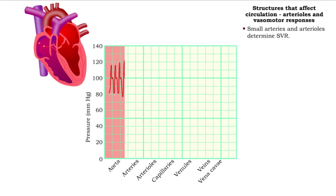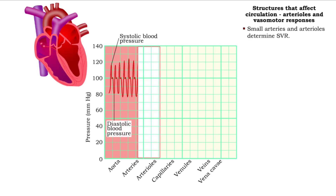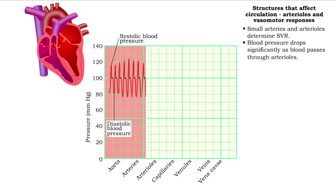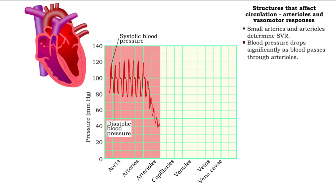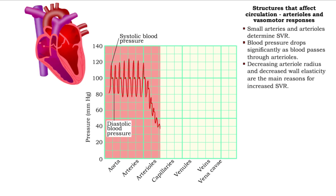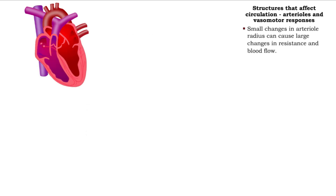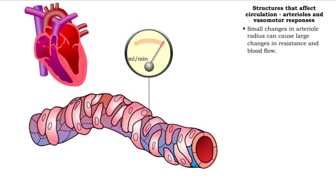Small arteries and arterioles play a primary role in determining systemic vascular resistance. As blood passes through arterioles, pressure decreases significantly. Decreasing arteriole radius and decreased wall elasticity are the main reasons for increased systemic vascular resistance. Small changes in vessel radius can lead to large changes in resistance and blood flow.